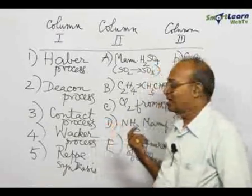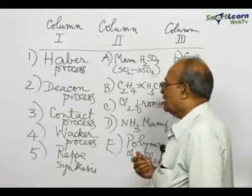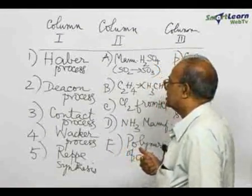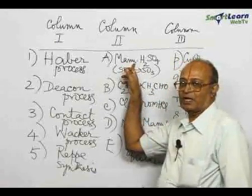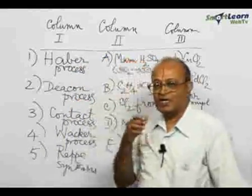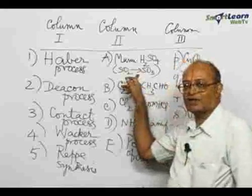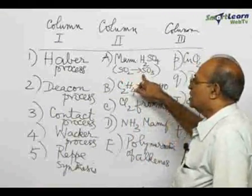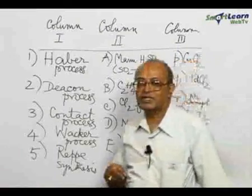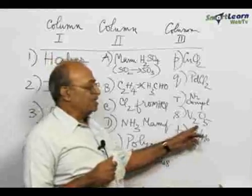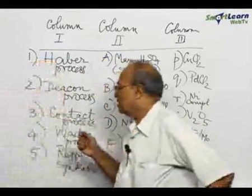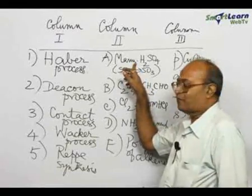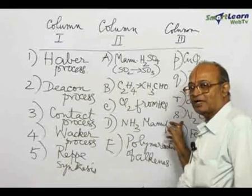The Contact process is again, just like the Haber process, a well-known process you are quite familiar with. The Contact process involves the conversion of SO₂ to SO₃, and for this the catalyst used is vanadium pentoxide (V₂O₅). So Contact process in column one is linked to A in column two, and S — vanadium pentoxide — in column three. The matching is 3-A-S.